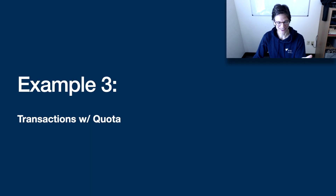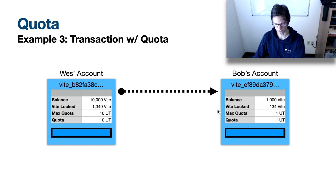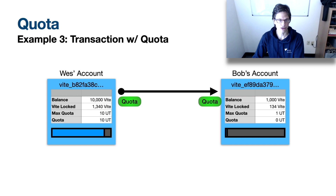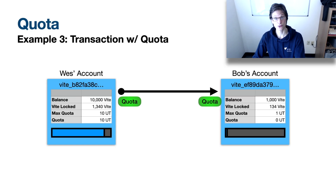In our third example, both me and Bob have some quota. I've locked 1340 Vite to provide 10 unit transactions worth of quota. Bob has locked 134 Vite for exactly one unit transaction worth of quota. When I initiate the send transaction it deducts quota from my account, Bob's receive transaction deducts quota from his account, and the transaction gets confirmed by the snapshot block producers. The quota will regenerate over time.